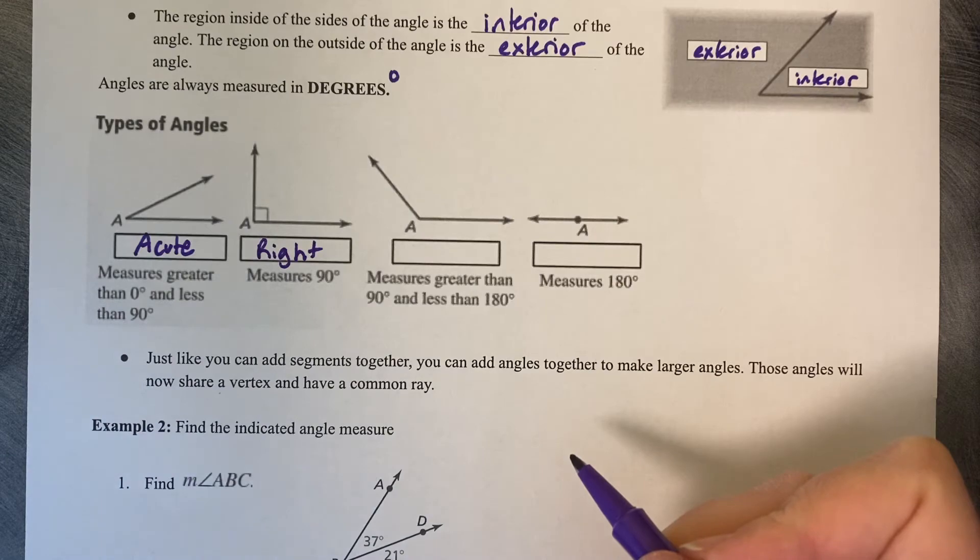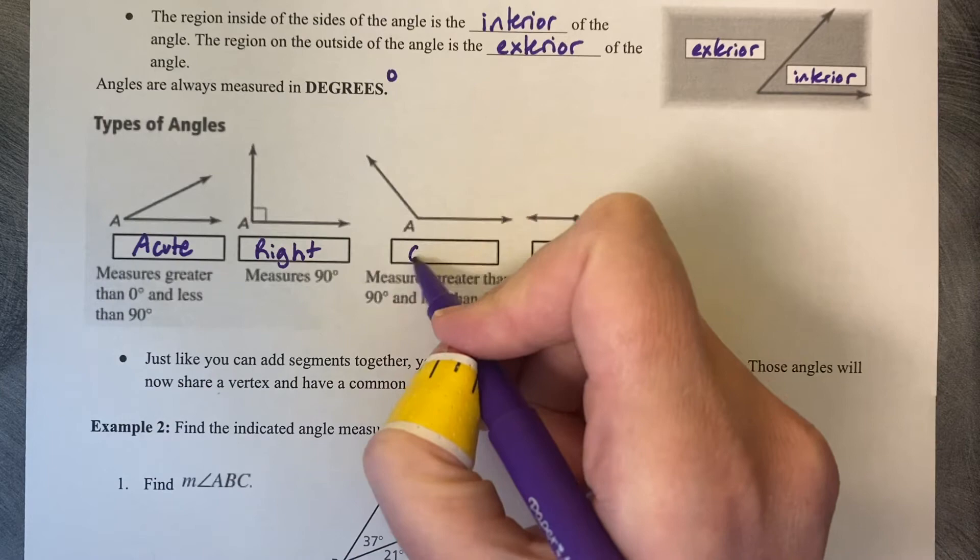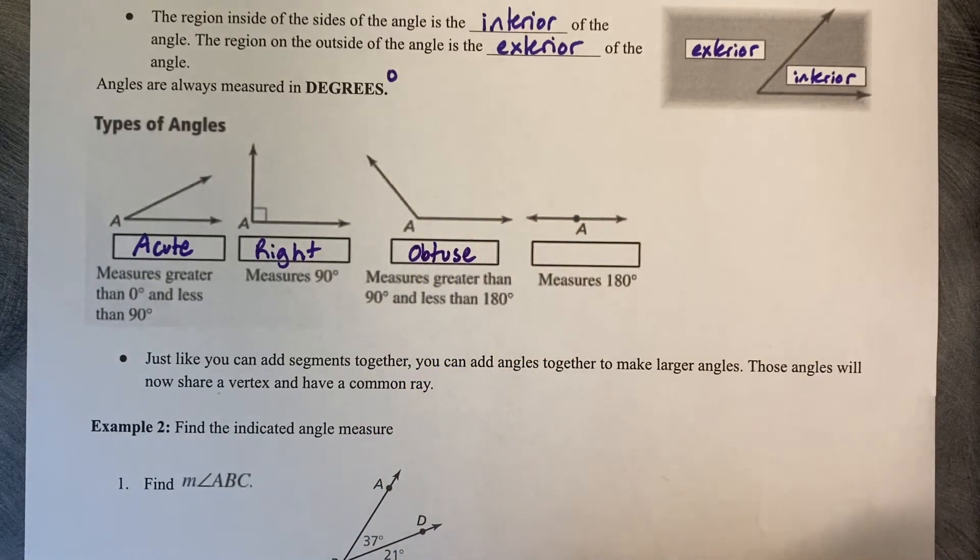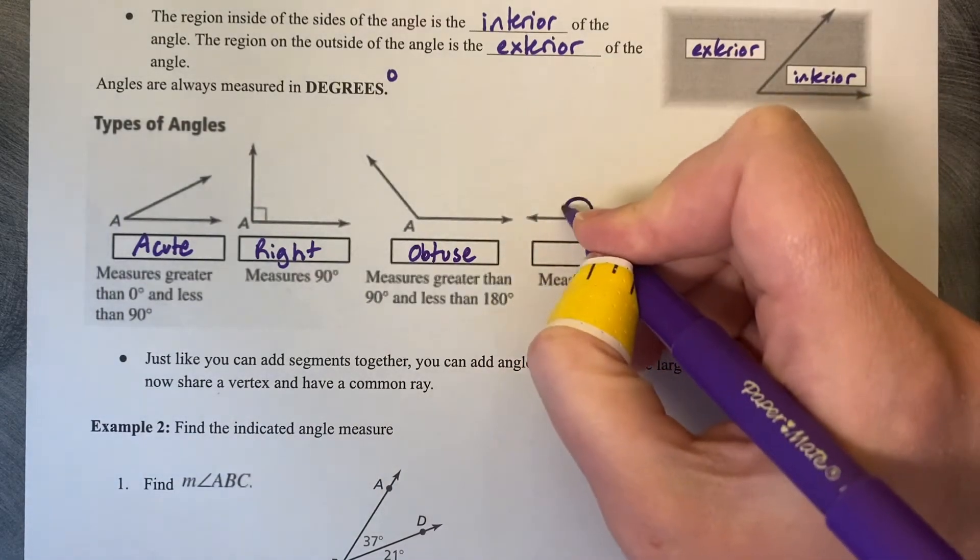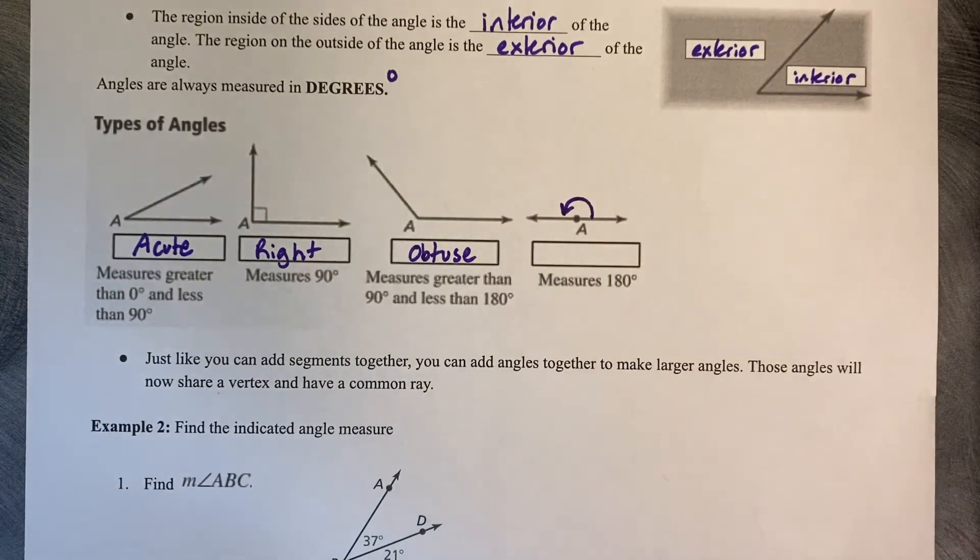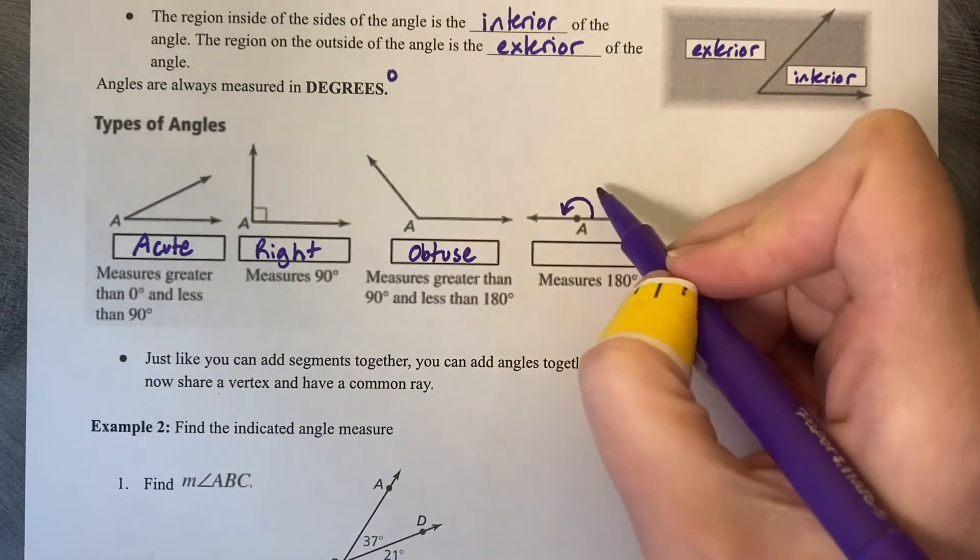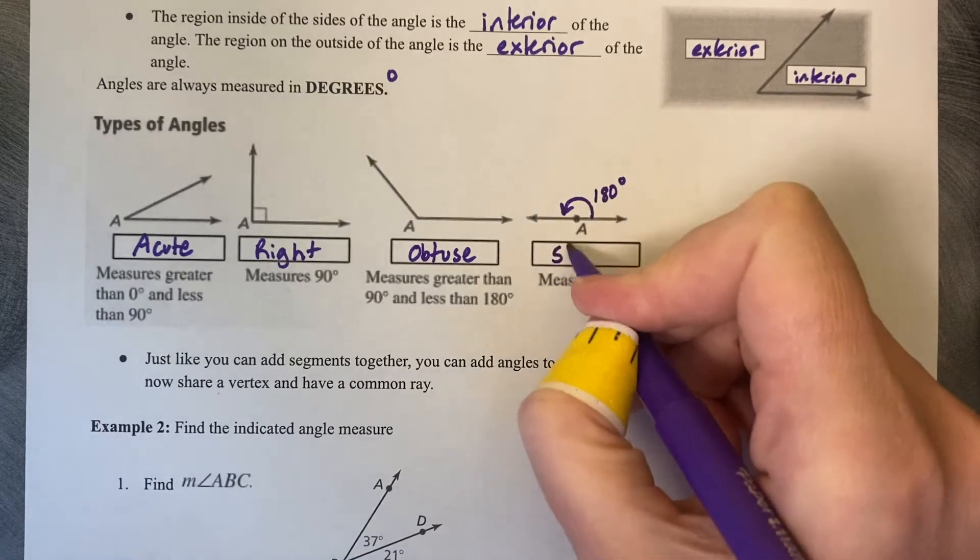Then if you get larger than 90 degrees, if you open all the way up, or almost all the way up, you can call that an obtuse angle. And finally, if you open all the way up to lay all the way down, this angle measure from this ray to this ray is 180 degrees. It's a straight line. So this is what's called a straight angle.